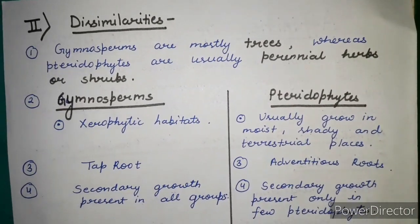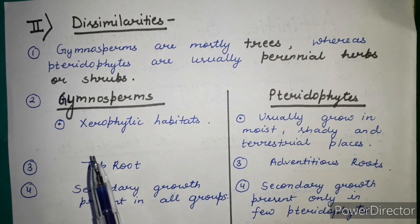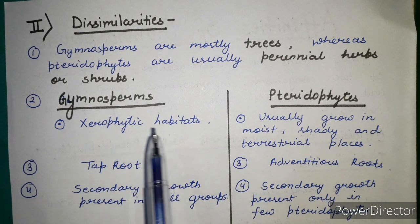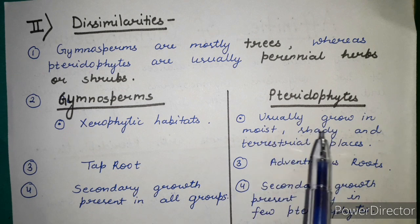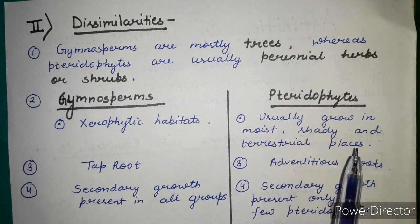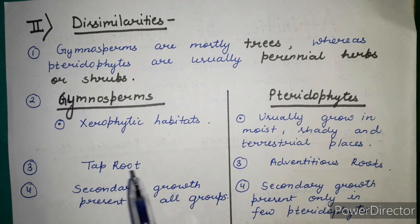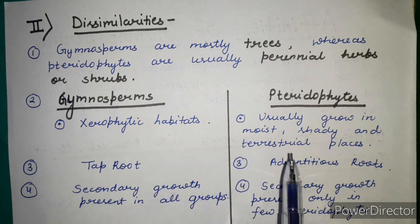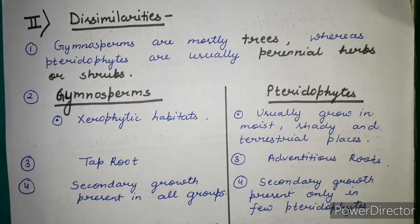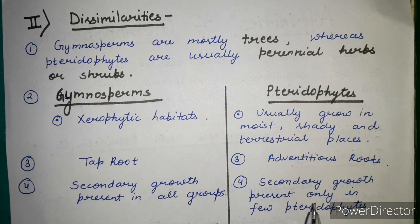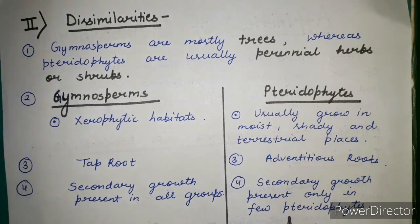To summarize the dissimilarities: gymnosperms grow in xerophytic habitats while pteridophytes grow in moist, shady and terrestrial places. In gymnosperms, tap roots are present which later convert into adventitious roots, while pteridophytes have adventitious roots. Secondary growth is present in all gymnosperm groups, but only in some pteridophytes.